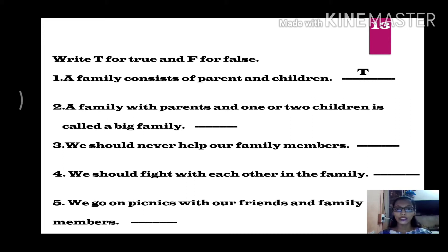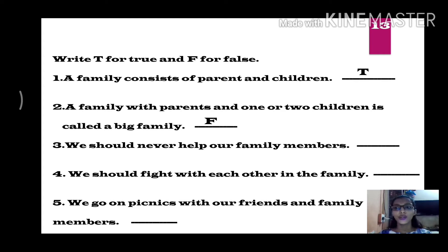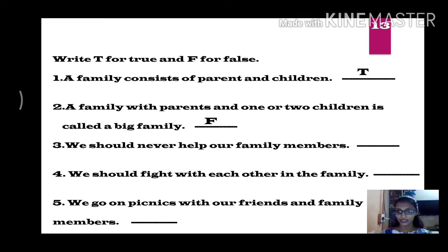A family with parents and one or two children is called a big family. True or false? It is false. That type of family is called a nuclear family, or small family.